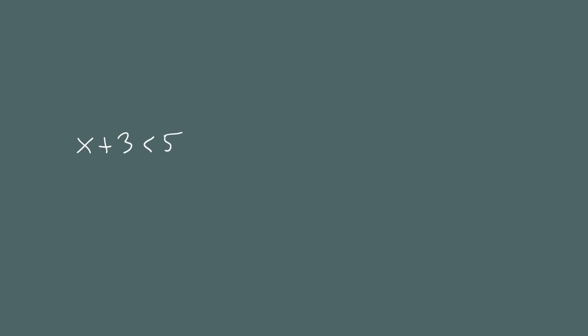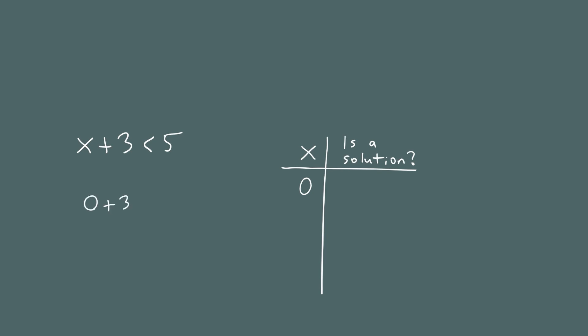For our first example, let's look at how to solve x plus 3 is less than 5. We have a less than symbol, so this is an inequality. To get started, I'm going to make a table where we'll try different values for x and check if they're solutions. Let's start with 0 — plugging it in gives 0 plus 3 is less than 5, which is true. So 0 is a solution.